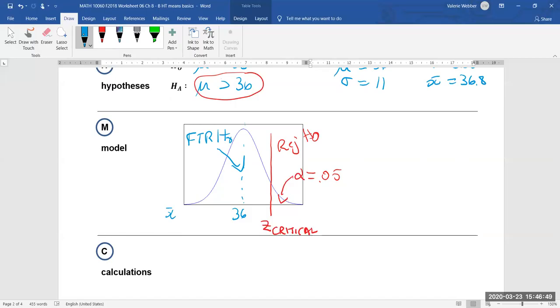Now something else we're going to have to sort out is what is this zed critical going to be equal to? So remember if we go back to our zed tables here we have area to the right is equal to 0.05 with our alpha of 0.05.